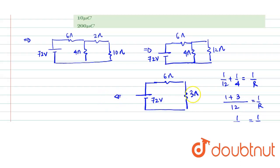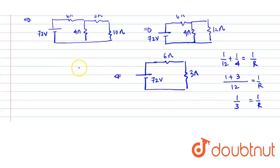Now 6 and 3 are in series, so this will be having a total of 9 ohm resistance connected with a battery of 72 volts. So can we find the current? Current is 72 by 9, which is 8 ampere.